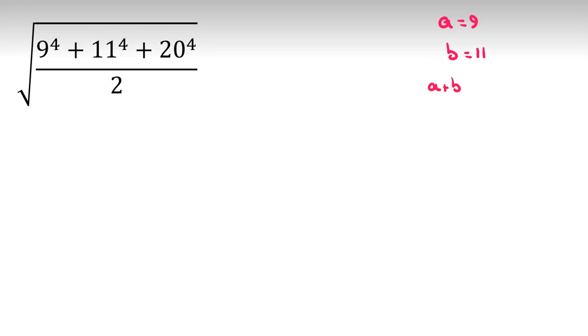And A plus B is 20. Now, I try to calculate. Let me consider the numerator here, for example, as C. So I call this C over 2. And C is what? C is 9 to the 4 plus 11 to the 4 plus 20 to the 4.